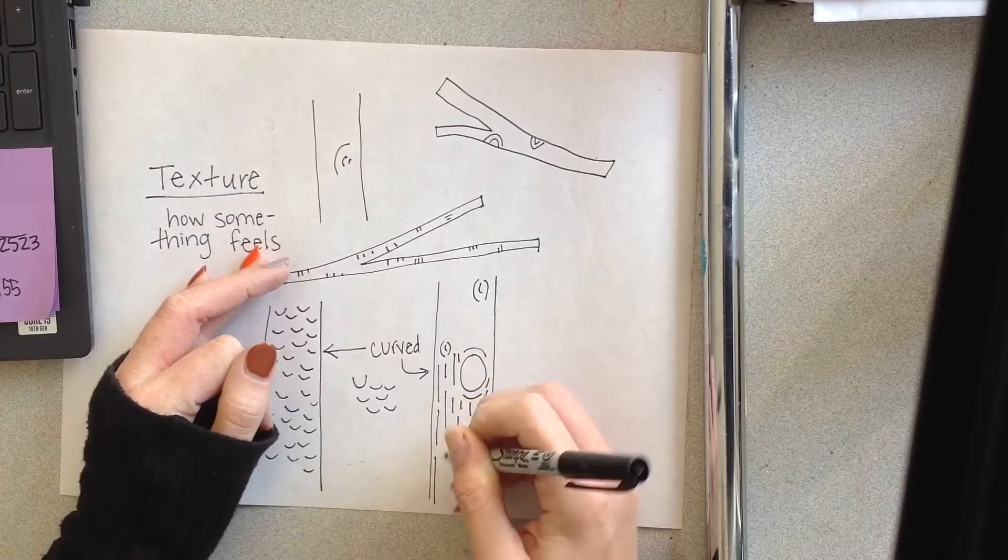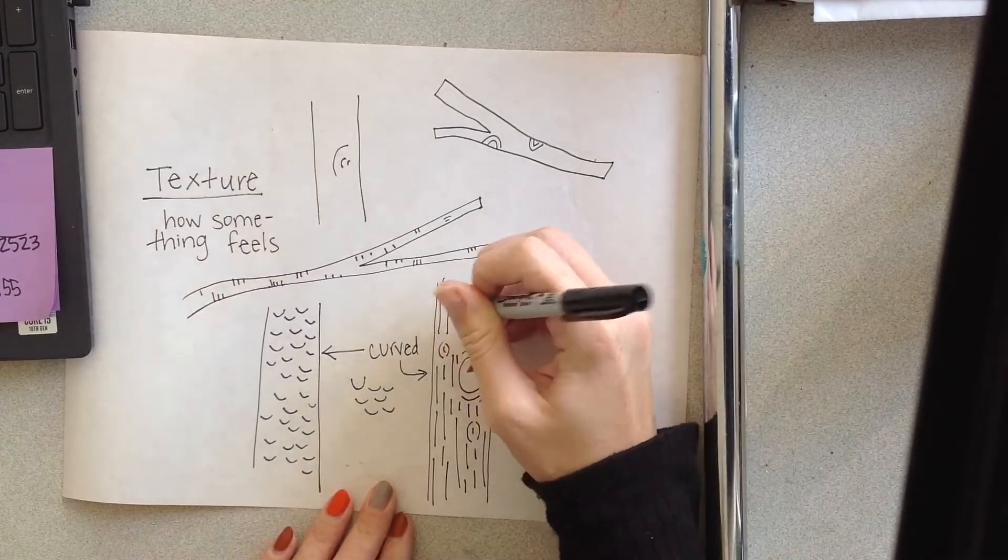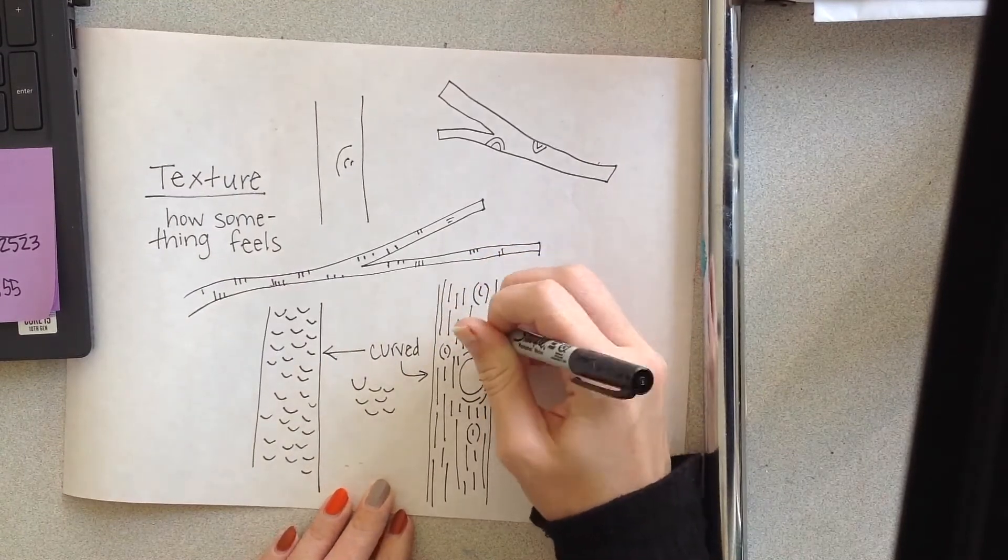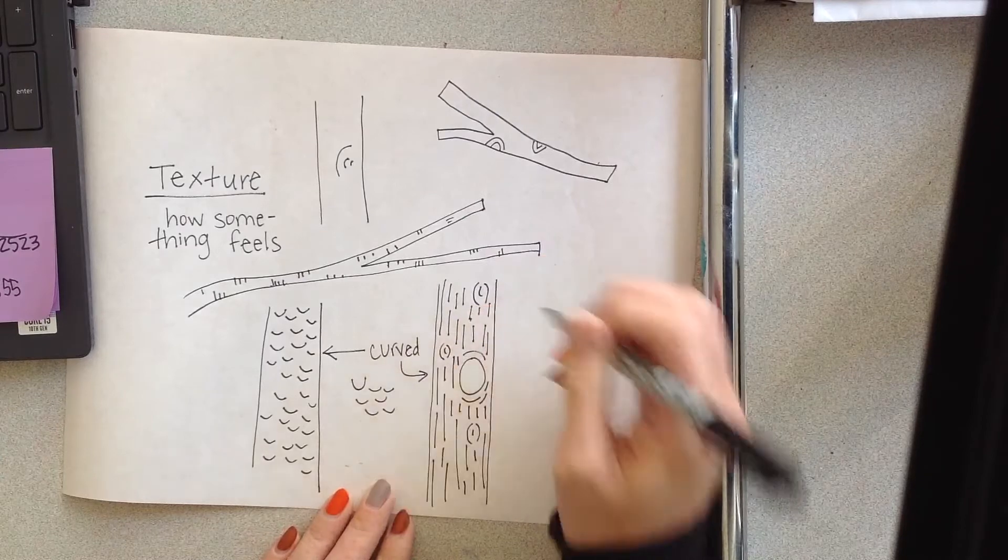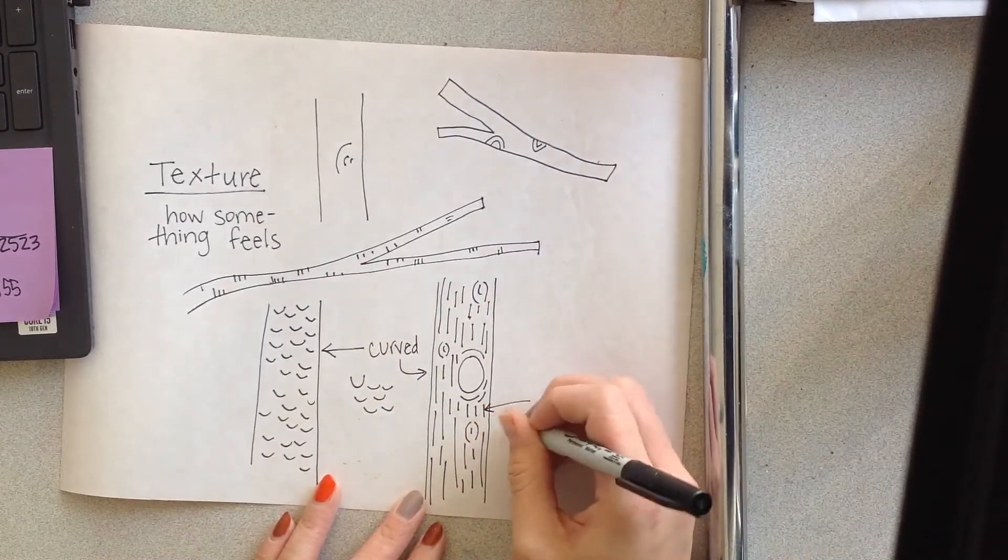And this is going to be really good for us doing our scratch art, because scratch art is going to be easiest when we are working with lines. And that's what we're going to be doing. Okay, so you can do trees that have both curved and straight lines.